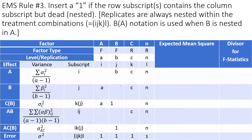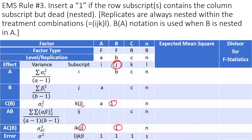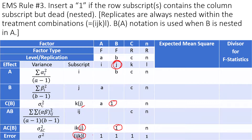The next rule applies to dead subscripts — subscripts within parentheses, meaning nested factors. For a dead subscript, if it contains the column subscript, then you type 1 in that cell. For example, J is a dead subscript and it contains the column subscript J, so we type 1 there. Similarly, all replicates are nested within the treatment combination, so for the IJK subscript which is dead and contains the column, we insert 1.